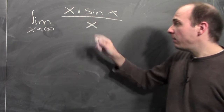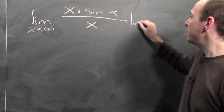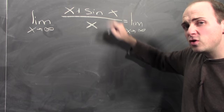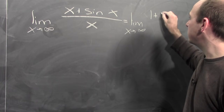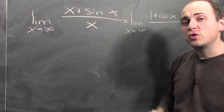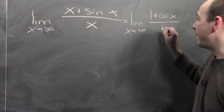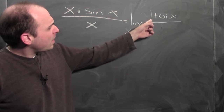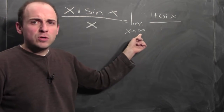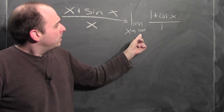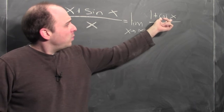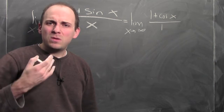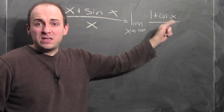L'Hopital tells me to look at the limit as x approaches infinity of the derivative of the numerator, which is 1 plus cosine x, over the derivative of the denominator, which is 1. Now, what's the limit of 1 plus cosine x as x approaches infinity? The limit of 1 is just 1, but the limit of cosine x as x approaches infinity — cosine just oscillates between minus 1 and 1 — this limit doesn't exist.